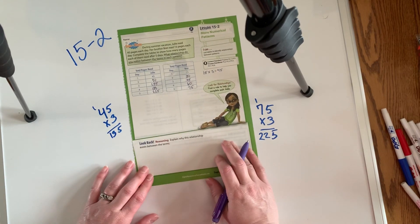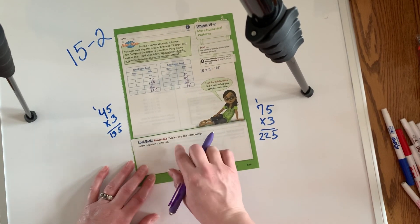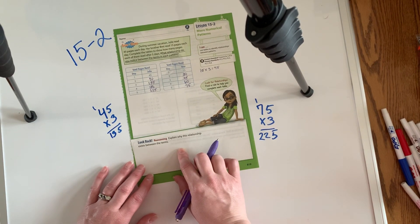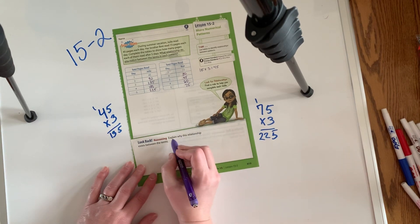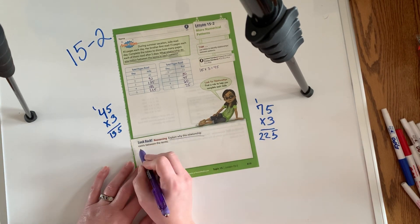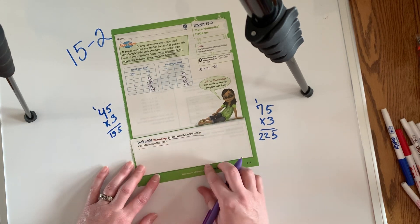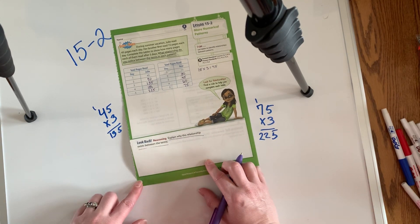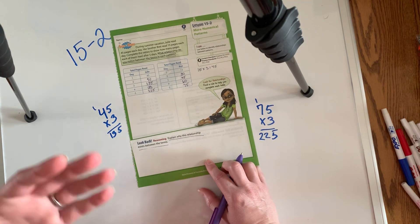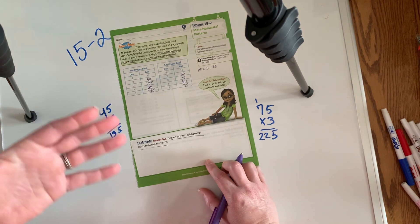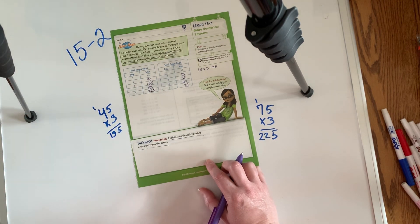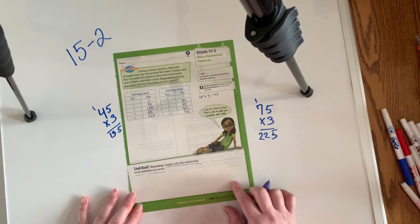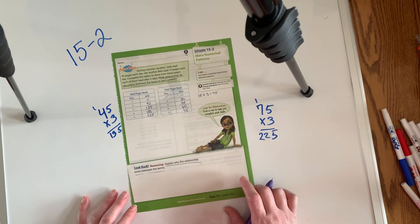So she's always reading three times as much as him — that's kind of cool. For the look-back question, it asks why does this relationship exist between the terms? The answer you're looking for is: she's reading three times as many pages each day, and so that three-times relationship will continue over time. So that is lesson 15-2.